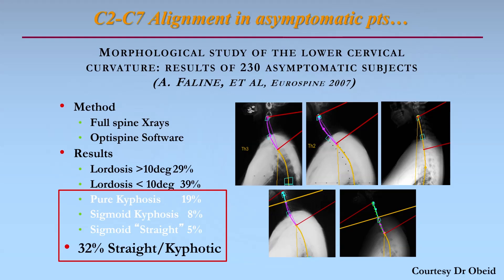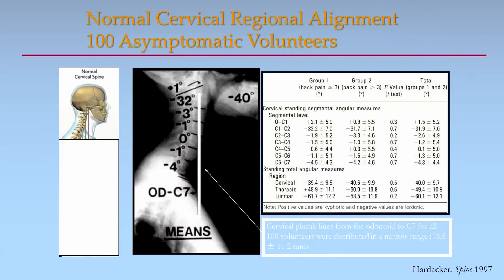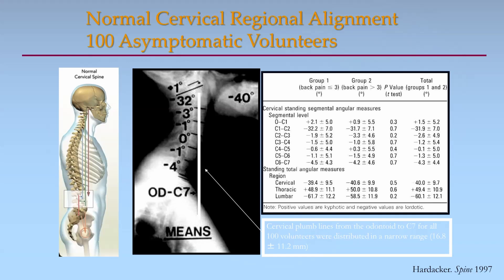It's not simple enough to say that any kyphosis equals cervical deformity. In a study from Obeid and colleagues, they looked at 230 asymptomatic subjects and found that up to one-third of them had a straight or kyphotic spine. Hardiker and colleagues published normative values for cervical alignment back in 1997, but they did not take into account the rest of spinal alignment, including thoracolumbar and pelvic alignment.